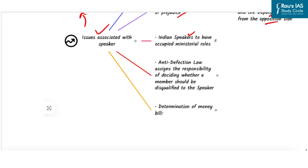It is common for Indian Speaker to have occupied ministerial roles shortly before or after their term. As a result, if there is no evidence to substantiate such allegations, it is not unexpected for Speaker in India to be accused of partisanship. Another issue is anti-defection law assigns the responsibility of deciding whether a member should be disqualified to the Speaker, who has significant discretion. However, this discretion has often been exploited by the ruling party to eliminate dissenting voices. Next issue is determination of money bill. It has been criticized for certifying bills such as Aadhaar bill as money bill, though it may not have met the strict criteria laid out in the Constitution.